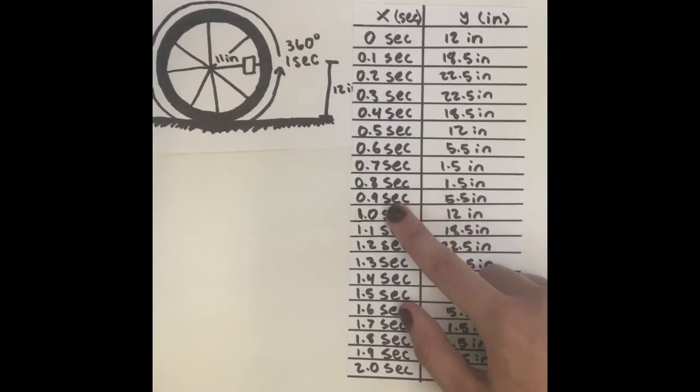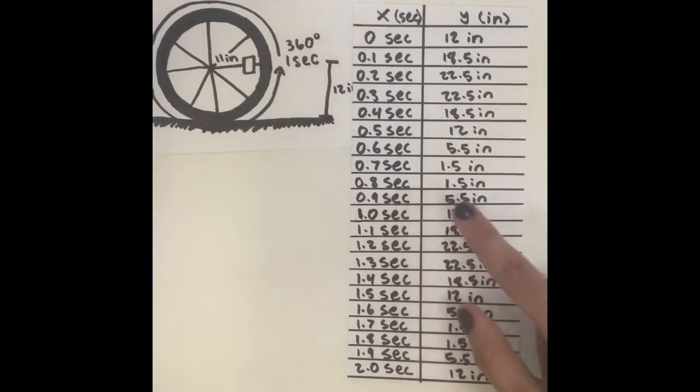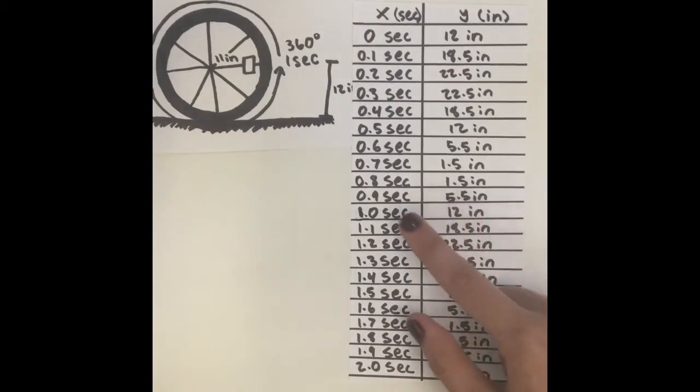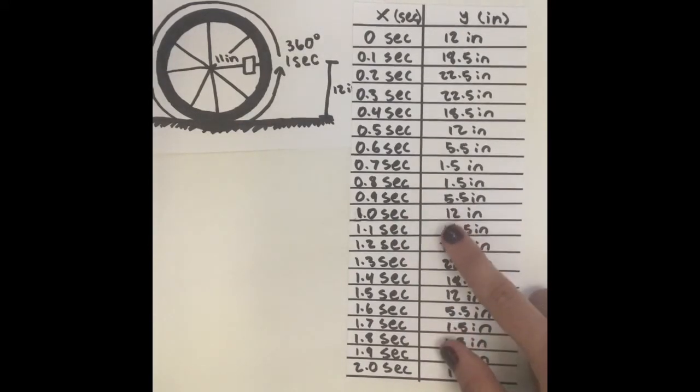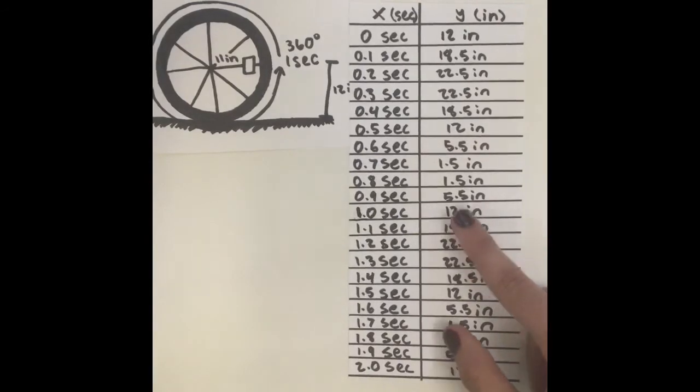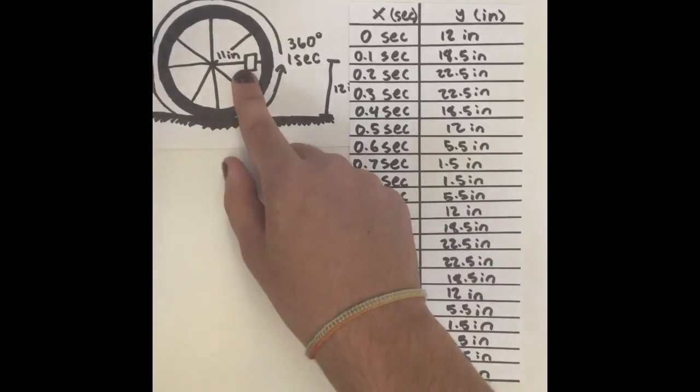At 0.9 seconds, the reflector is at 5.5 inches, and at one second, the reflector has finished the first period and has made one entire rotation and is back to 12 inches at this spot here.